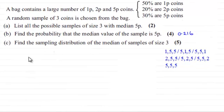Hi there. Before we look at part C of this question, I'll just run through what we've covered in parts A and B. We had a bag that contained a large number of 1p, 2p, and 5p coins, and the proportions are shown here.